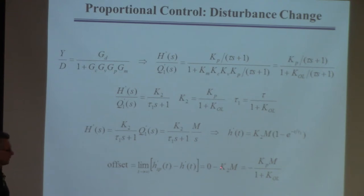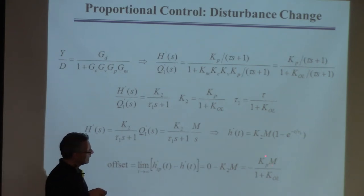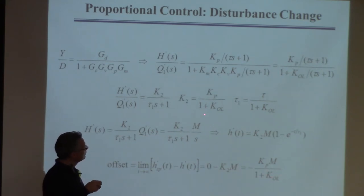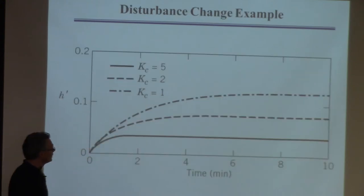That's not zero. We don't expect it to be zero because it's only proportional control. We'd like it to be zero, and it can be close to zero if KOL is really large, which means if the controller gain is really large.